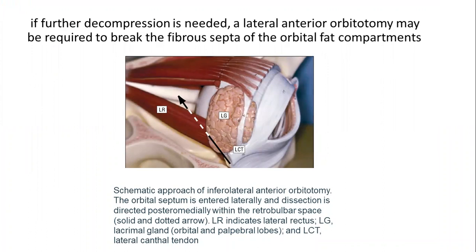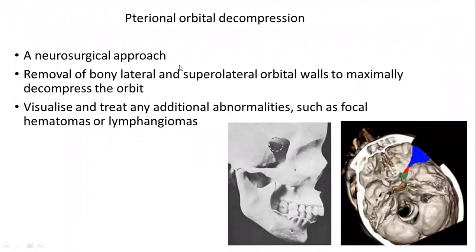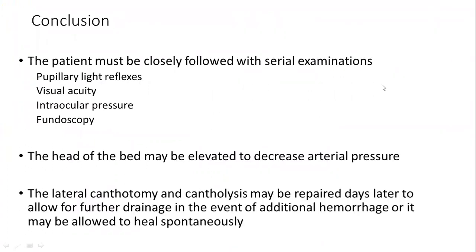If that does not reduce the pressure, you can open the lateral wall of the orbit or even perform anterolateral orbital decompression, which is a neurosurgical procedure involving opening a portion of the skull. In conclusion, retrobulbar hemorrhage is a medical emergency requiring immediate treatment. It is a fairly simple procedure that can save a patient's eye and vision. Post-operatively, the wound does not need to be closed immediately — it can be left open or closed after a week, as it heals well with minimal complications.